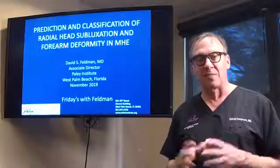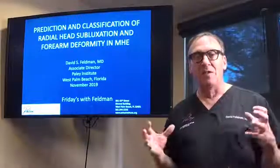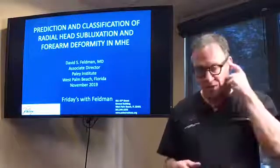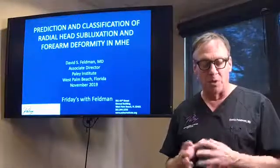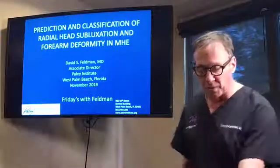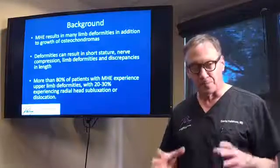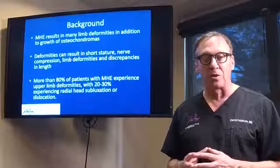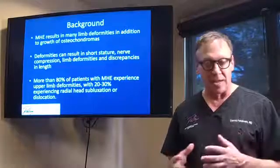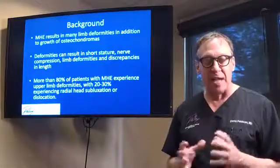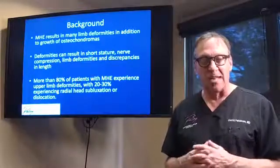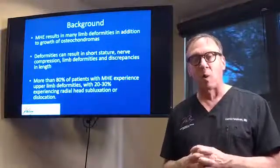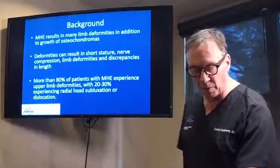I'm going to give a bit of a scientific conversation about it, because we're trying to change the way surgeons, physicians, clinicians, and patients look at the way we treat this problem — how do we treat forearms and elbows in children or adults with multiple hereditary exostosis? The background is MHE causes many limb deformities by the growth of these osteochondromas. Deformities can result in short stature, nerve compression, limb deformities, and discrepancies in length. More than 80% of patients with MHE have some type of problem in their upper extremities.